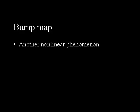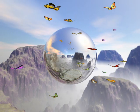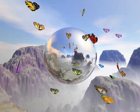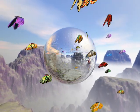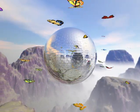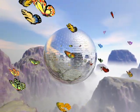Our technique can also render reflections off bump map surfaces. This is another example of a non-linear phenomenon. Here, we change the bumpiness of surfaces at run-time to demonstrate the bump map effects.